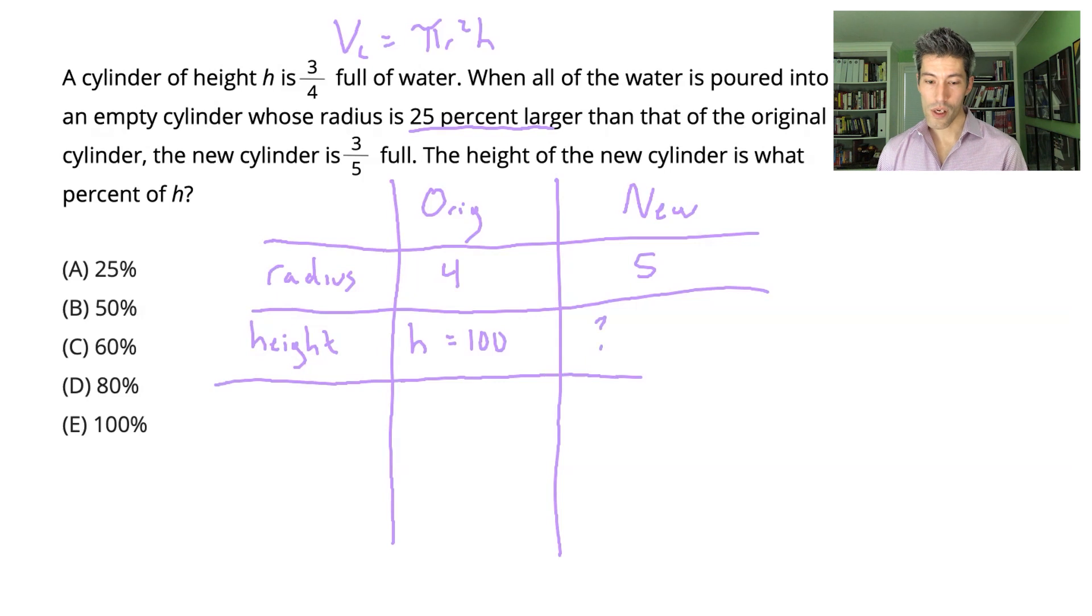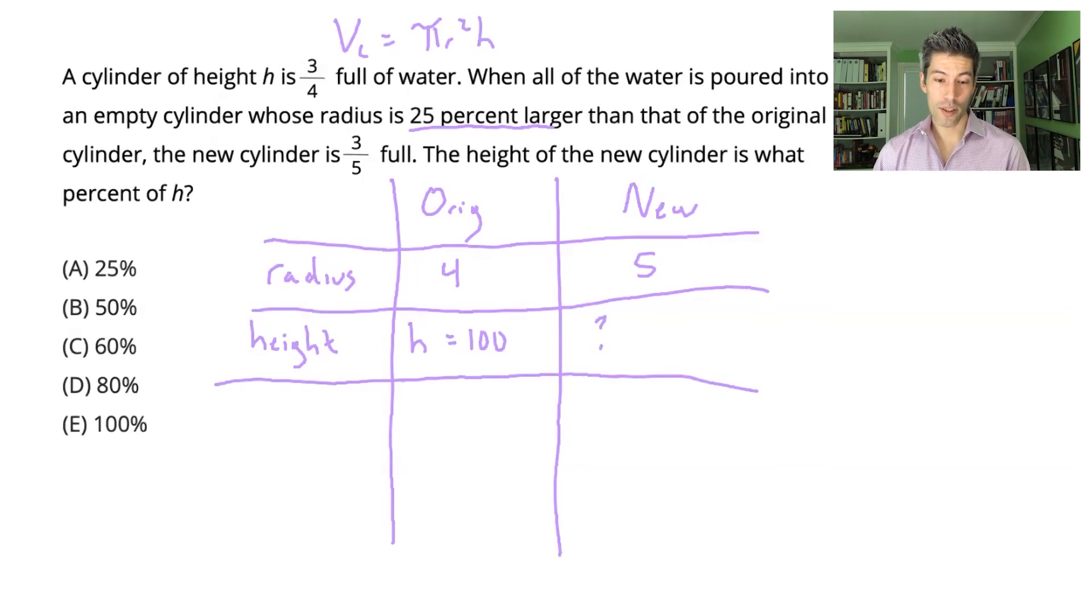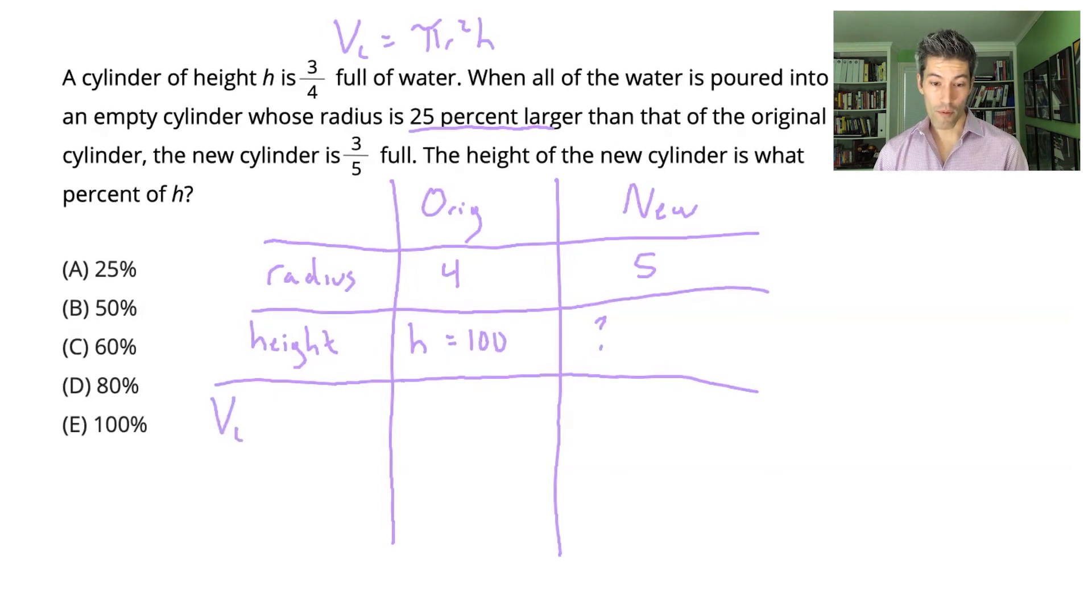All right. Now that I have information about the radius and height of the original cylinder, I am equipped to solve for the volume. Now remember, volume of a cylinder is πr²h. The values here will be π times 4² times 100. 4² is 16. 16 times 100 is 1600 times π is 1600π.